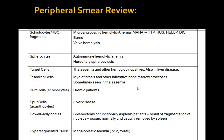Size matters — whether the cell is normocytic, microcytic, or macrocytic. Shape is especially important: spherocytes are common in autoimmune hemolytic anemia and hereditary spherocytosis; target cells in thalassemias and hemoglobinopathies; teardrop cells in myelofibrosis; burr cells in uremic patients; spur cells in liver disease; and Howell-Jolly bodies in splenectomy or functionally asplenic patients.